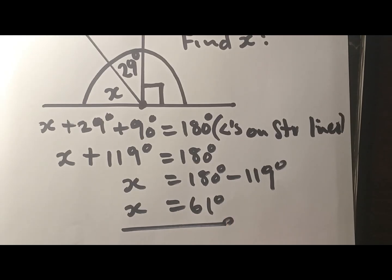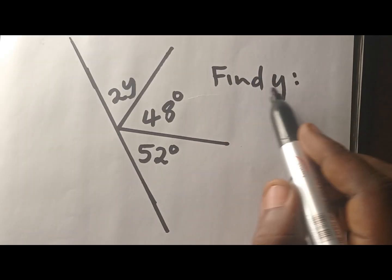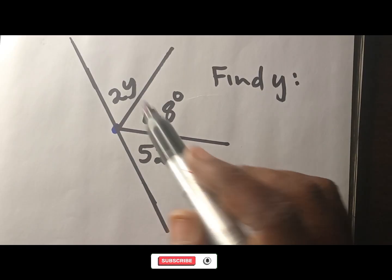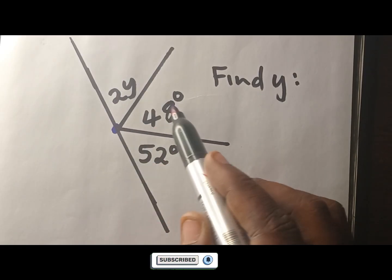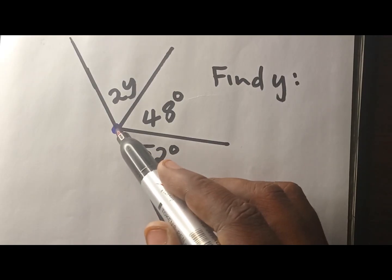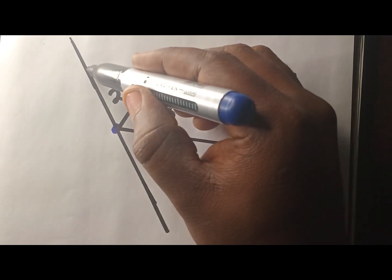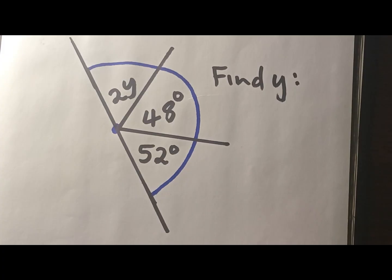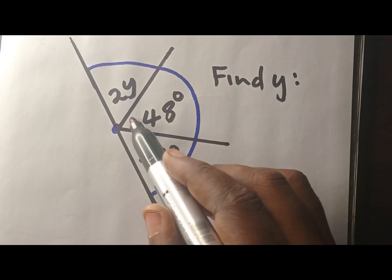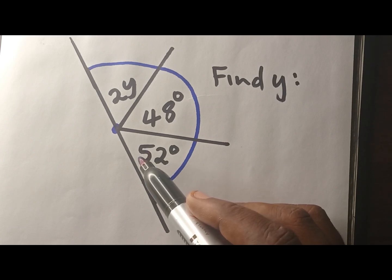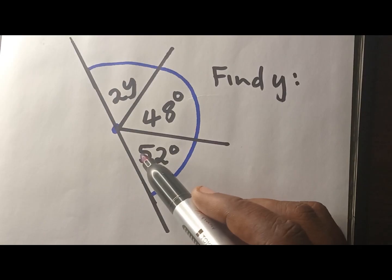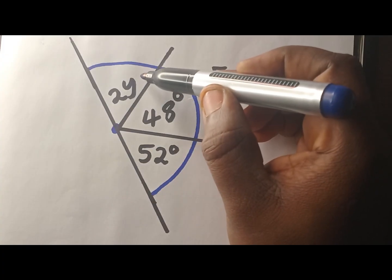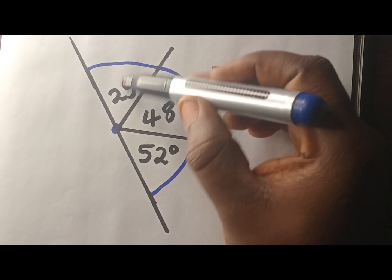What about this one? Here they say find Y. Looking at this point, this angle, this angle, and this angle are all formed from the same point. These angles are on the same side of the straight line. Which means I can say this angle plus this angle plus this angle equals 180. Those angles are supposed to add up to 180, so I need to solve for Y to find what that angle is.